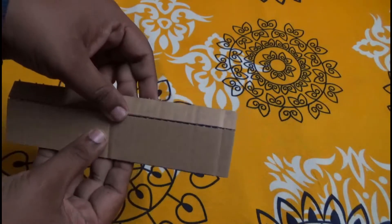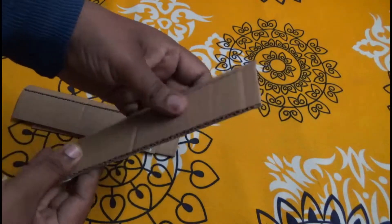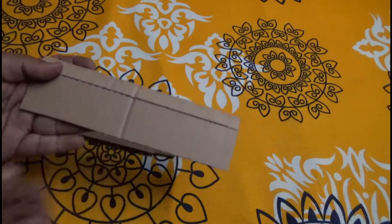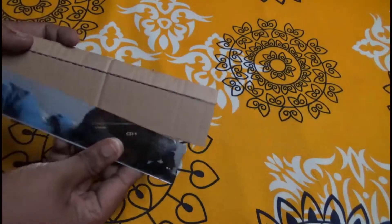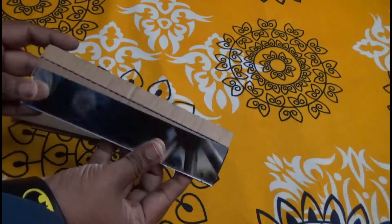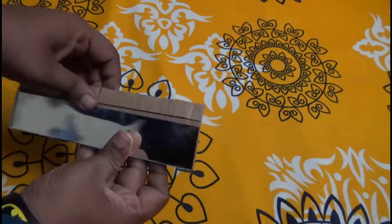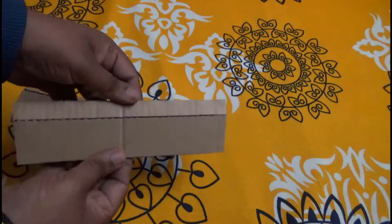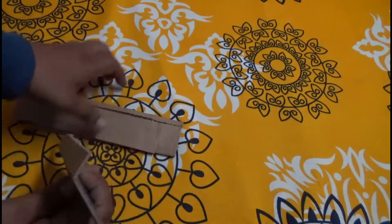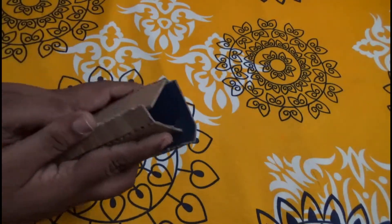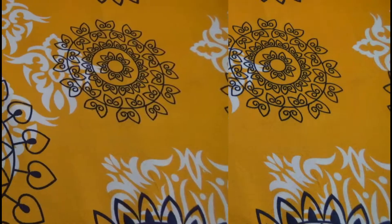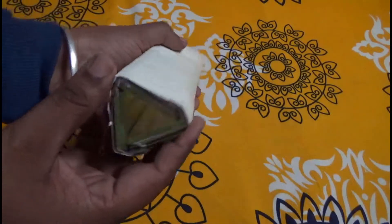To hold them in place we are going to use three strips of cardboard whose lengths are the same as the mirror strips but the width is 1 centimeter more than the mirror. We are going to paste our mirrors on these cardboard strips using some super glue.